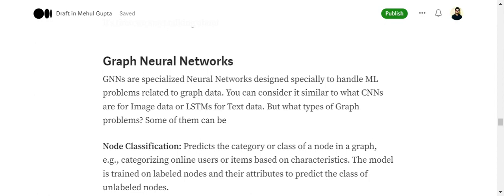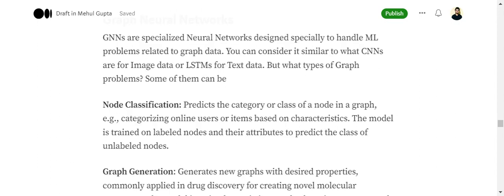First of all, GNNs are specialized neural networks designed specifically to handle graph problems. You can think of GNNs like CNNs. CNNs are mostly used for image datasets. Similarly, LSTMs or RNNs are used with text. GNNs are specialized for graph datasets. Now, what types of graph problems can GNNs solve? I'll give you a taste of that.